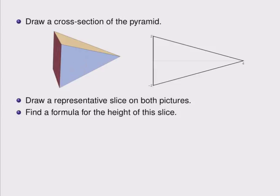Next, we're going to draw a representative slice on both pictures. By a representative slice, I mean an example of what a slice running straight through the three-dimensional object would look like, and also what it would look like in the two-dimensional view.